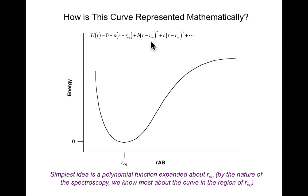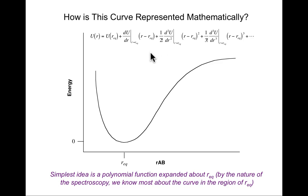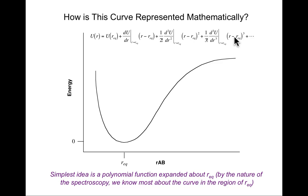Here's a generic polynomial expansion. It has a term that's linear in displacement from equilibrium, quadratic, cubic — well known in applied math from the Taylor expansion. The coefficients of those individual terms are equal to the derivatives of the energy with respect to the coordinate times the displacement, where the first derivative multiplies the linear term, the second derivative the quadratic term, the third derivative the cubic term, and so on. There are also factorial terms that come out in front.